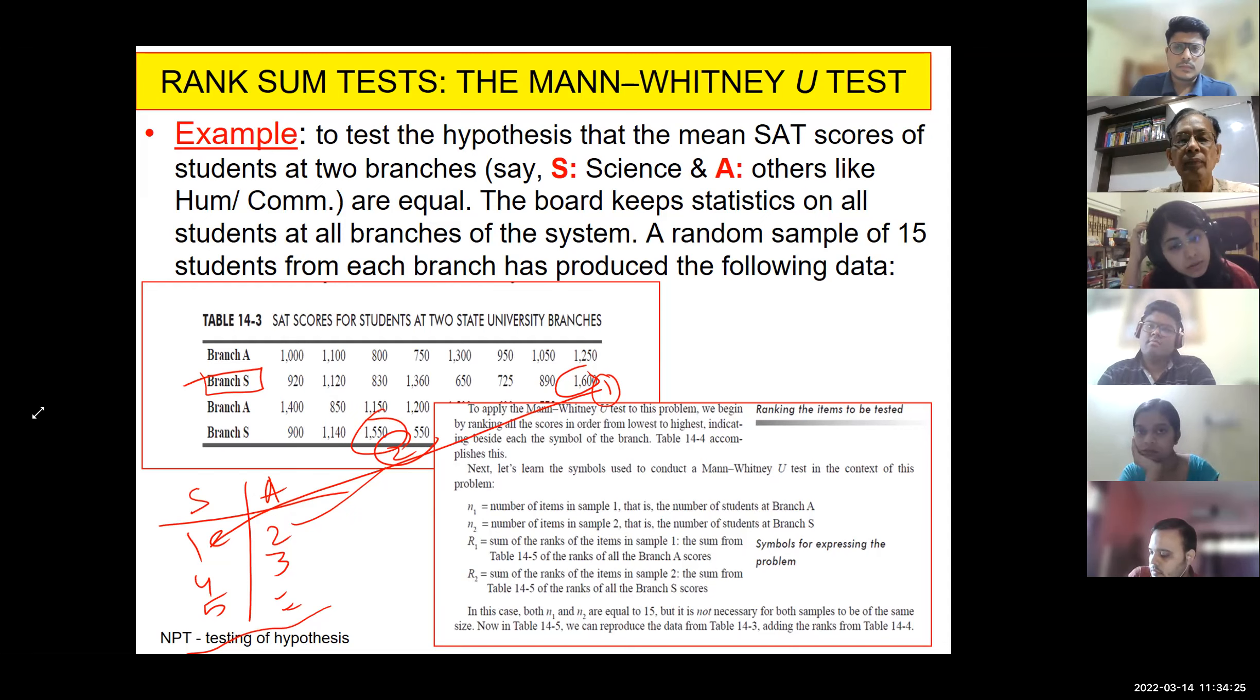First, we have to rank the individual branches. How will we be ranking? First, the highest rank will be given one. Together. Okay? Ranking will be done irrespective of branch. That is very important. Don't forget. Rohit, is that clear? So, R1 is sum total of the ranks belonging to first branch and R2 is rank sum of second. Okay?